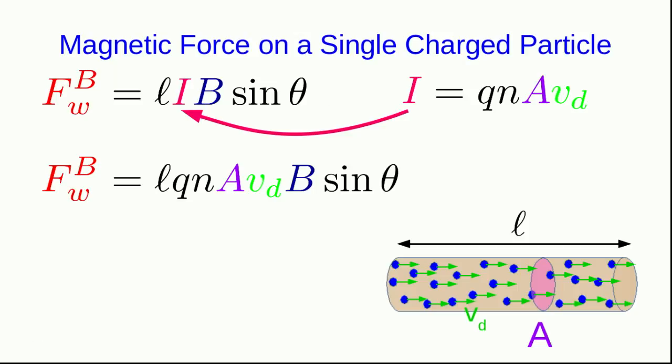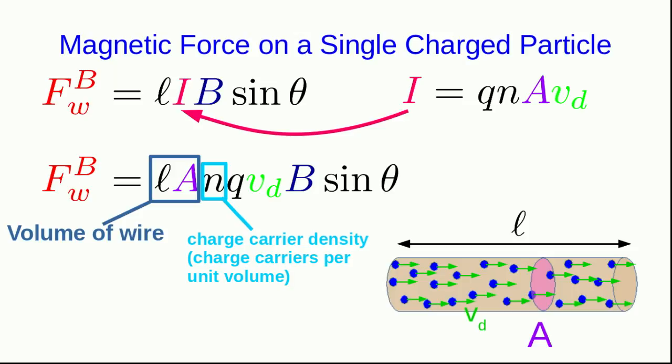So let's now put those together. And it gives us an equation that at the moment looks like gobbledygook. But if we just rearrange things a little bit and look at these things at the beginning and notice that La would be the volume of the wire. And that's being multiplied by the charge carrier density, which is the charge carriers per unit volume.